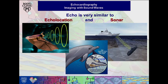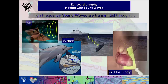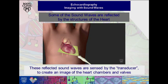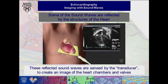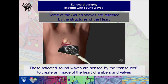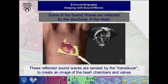Echocardiography is very similar to the natural process many animals use, and the Navy uses, in sonar. Bats, dolphins, and naval vessels all use sound waves that are transmitted into a medium — either the air or water, or in our case, the patient's body — to make an image of something at a distance from the sound source. Echocardiography uses these sound waves to make pictures of not only the chambers and valves of the heart, but of the blood flowing through them, and the arteries and veins leading to and away from the heart's structures themselves.